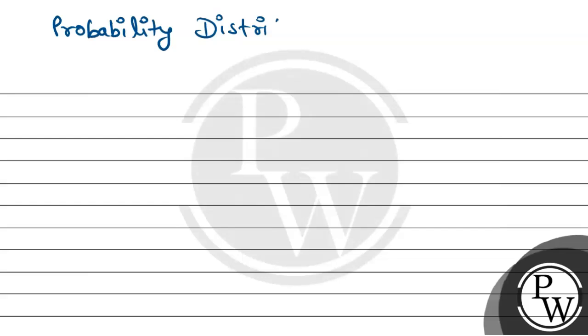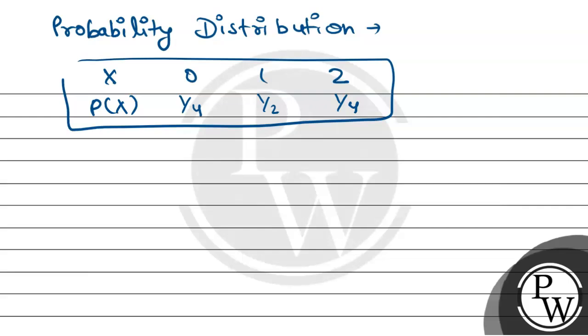So our probability distribution will be: X values are 0, 1, 2, and P(X) values are 1/4, 1/2, 1/4 respectively. These values we have derived. So this is our table and this is our first answer.